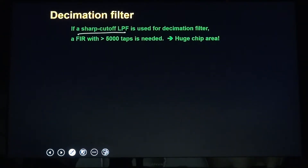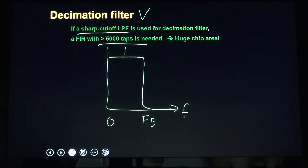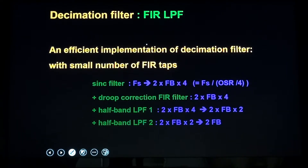If a very sharp cutoff single low-pass FIR filter is used for the decimation filter, it should have a sharp drop-off characteristic. However, the filter tap count can be too large — for example, 5000 taps — which is not economical and takes a huge chip area. Instead, we implement the decimation filter in a few steps to reduce the number of FIR taps. Mostly we use a sinc filter.